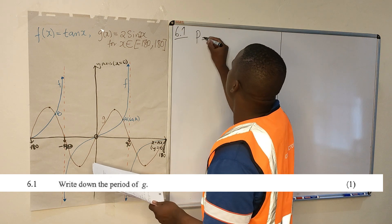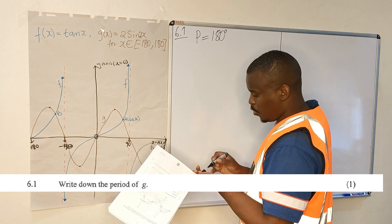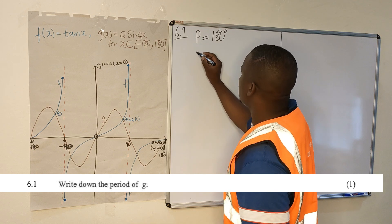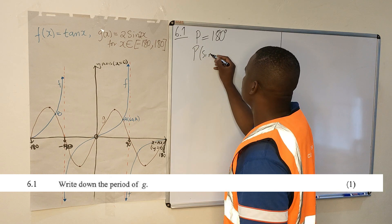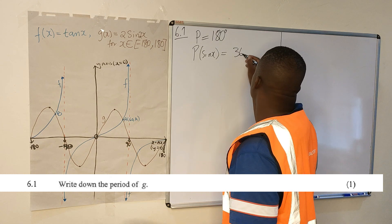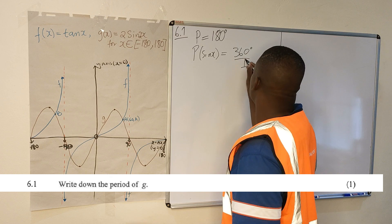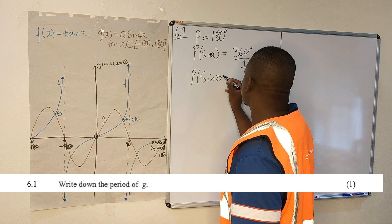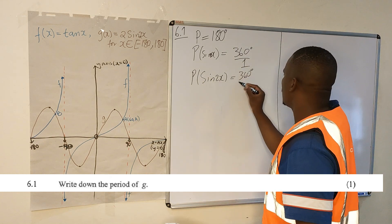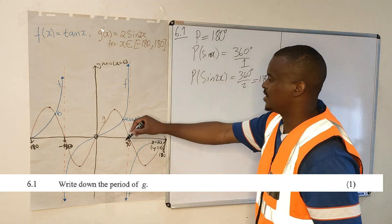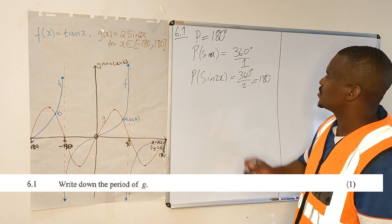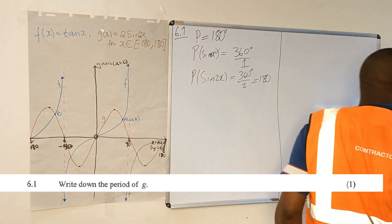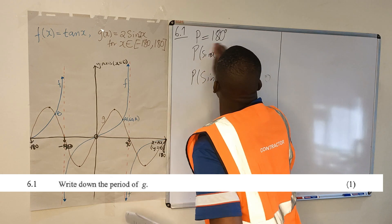The period is going to be 180 degrees. If you don't know how to look at it on the graph, you know that the period of sine x is 360 degrees over 1. If you want the period of sine 2x, it's going to be 360 degrees over 2, which is 180. So your period is 180.